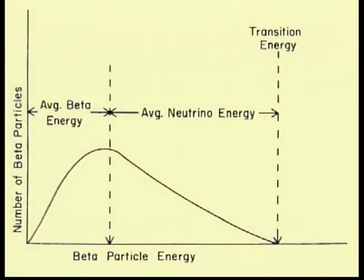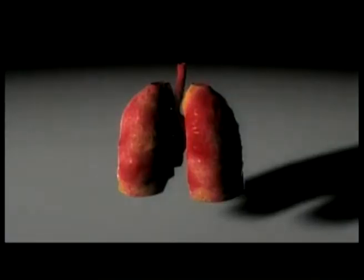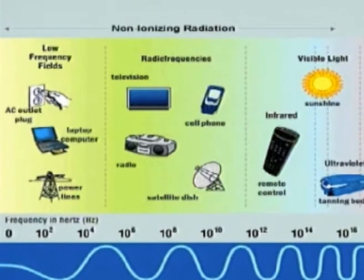Beta radiation is made up of energetic electrons which are small but with high speed. They can ionize any matter coming in their path. Beta particles are more penetrating than alpha and cause internal damage to the human body if inhaled or swallowed.